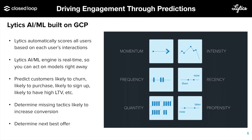We've also got scores for Intensity — what are they interested in — and Frequency — how often are they here? Are they here once a week on a scheduled basis and all of a sudden it spikes to multiple times this week? Now you know you've got them. Now you can seize that magic window of opportunity and determine and serve the next best offer.